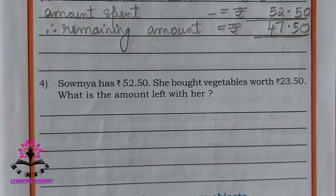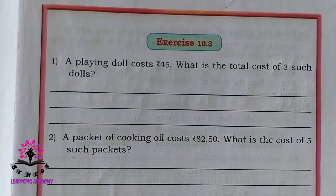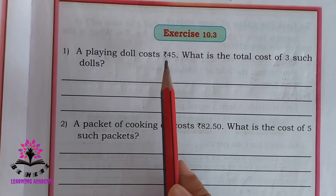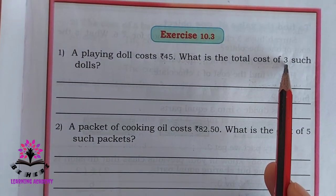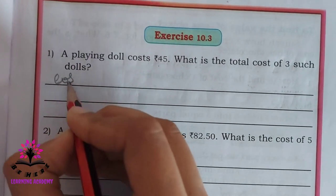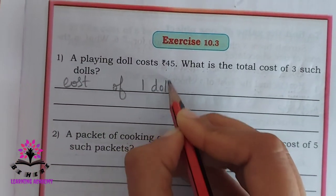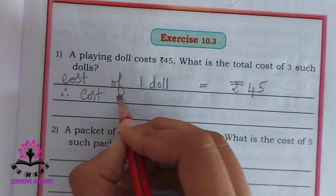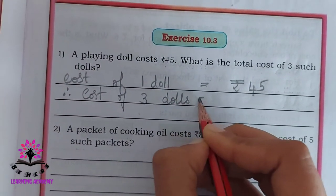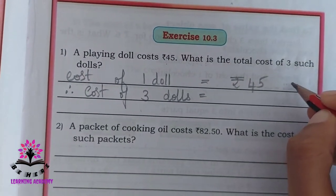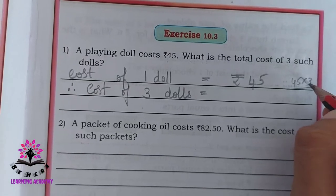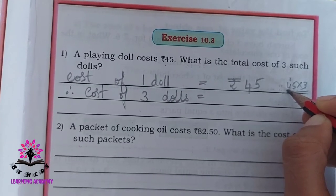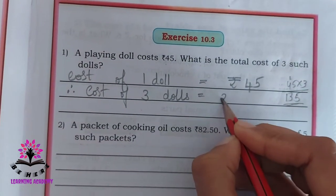Last problem you have to solve by yourself. Exercise 10.3. A playing doll costs rupees 45. What is the total cost of 3 such dolls? Cost of 1 doll is 45, you have to find the cost of 3 dolls. It is the process of multiplication. Cost of 1 doll is rupees 45. Therefore, cost of 3 dolls: 45 into 3. 3 fives are 15, 1 goes here. 3 fours are 12, plus 1 is 13. So it is rupees 135.